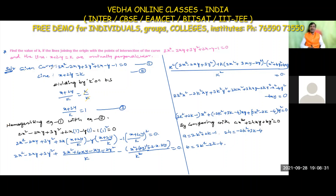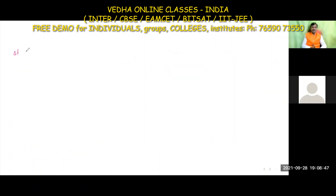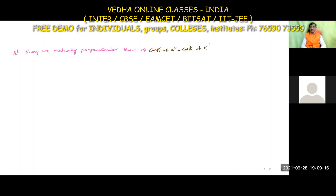He is asking to find the value of k when the lines are mutually perpendicular. The condition for mutually perpendicular lines is: coefficient of x² + coefficient of y² = 0, i.e., a + b = 0.